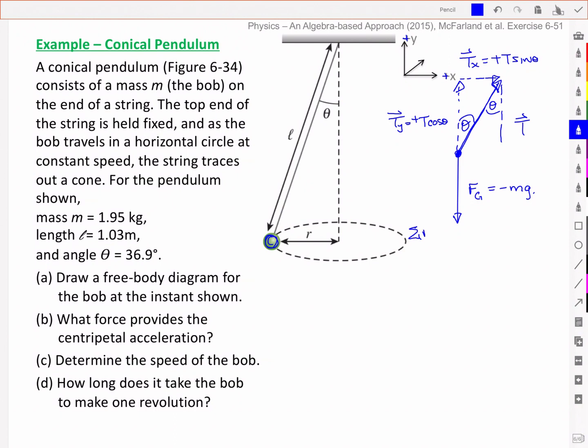Let's start off by looking at the sum of the y components. I've got a T cos theta, and a negative mg acting downward, and there's no acceleration in that direction, and so using that expression, I can actually solve for my tension.